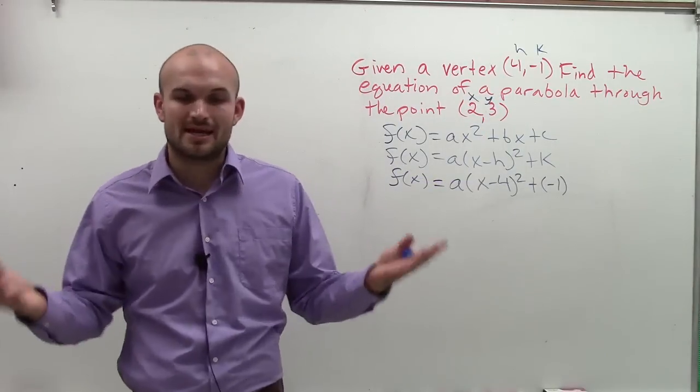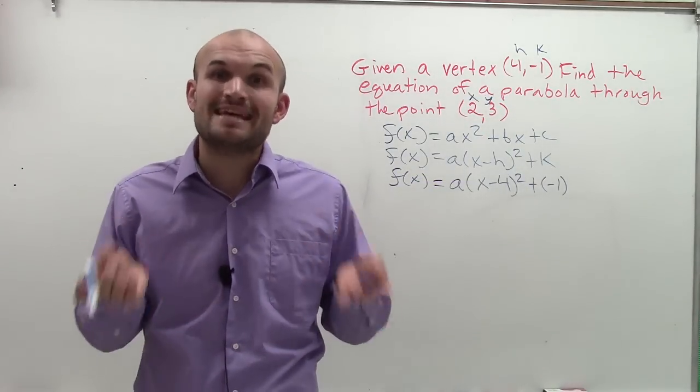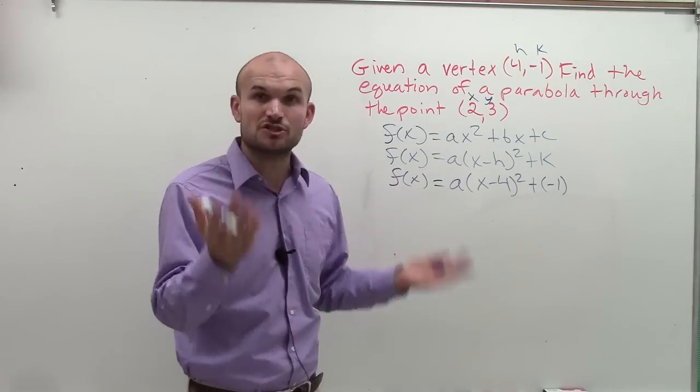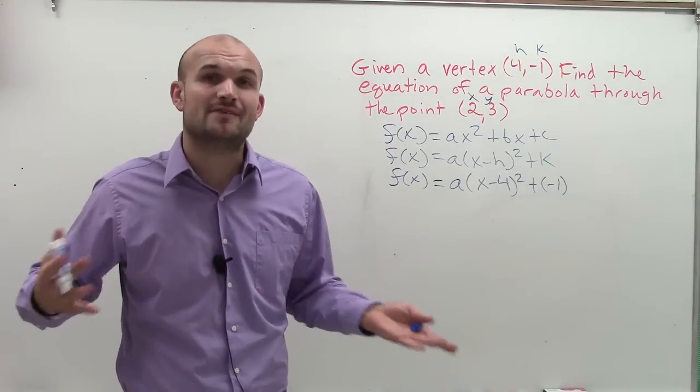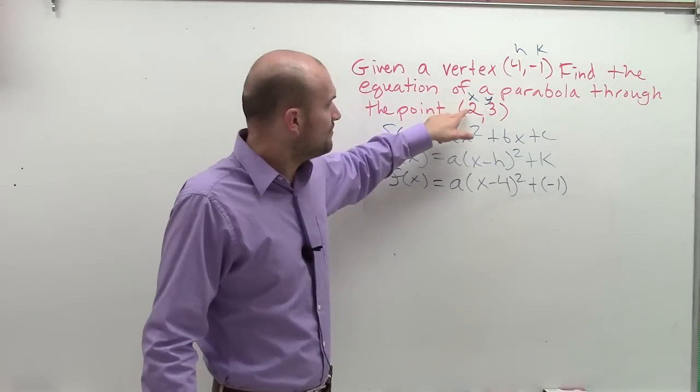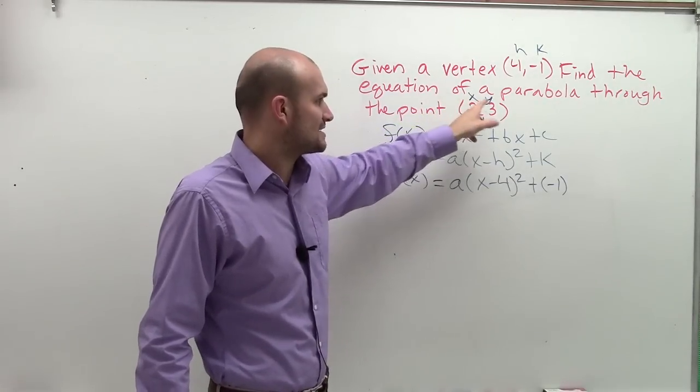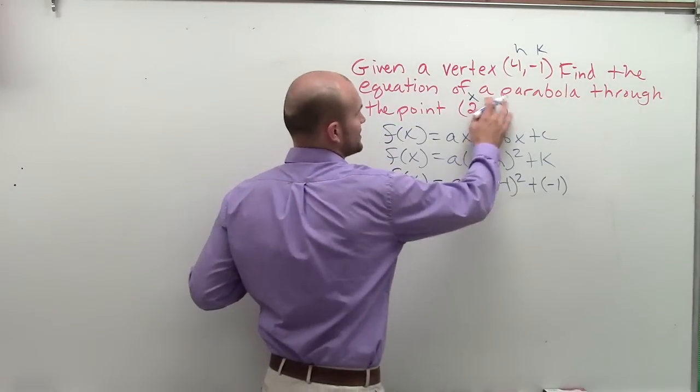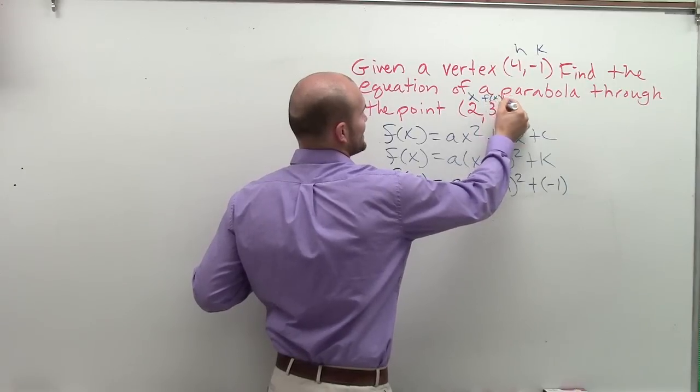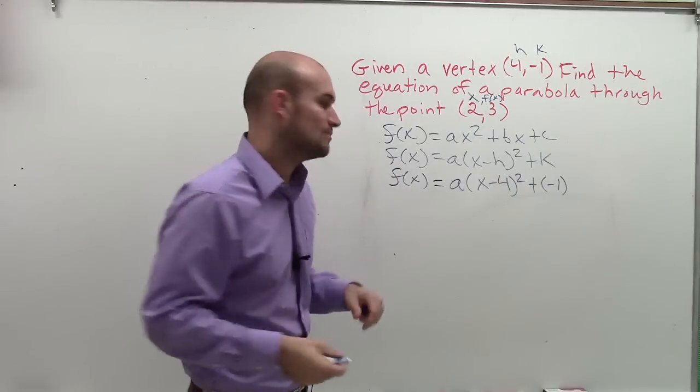But anyways, you can see that I have my point, which is a coordinate point. And guess what? A parabola is like a line, meaning it's made up of infinitely many points. It takes a different shape, but it's still made up of infinitely many points. So I can plug in my coordinate point for x and y, or since we're dealing with a function, x and f of x.